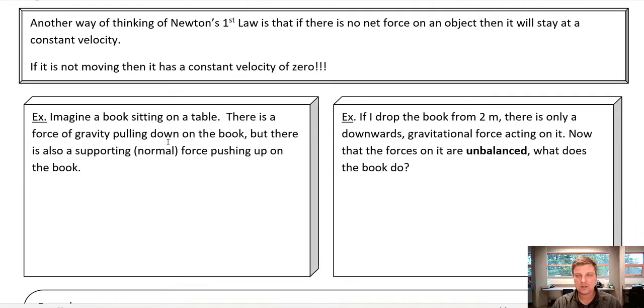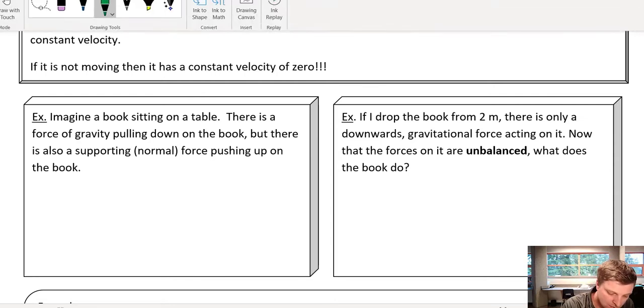So another way of thinking about Newton's first law is that basically velocities will stay constant. So if something has a velocity, it will stay at that constant velocity unless another force comes in and changes it. And that could include a velocity of zero. If something's not moving, it's not just going to start moving unless there's some force that's going to get it moving along.